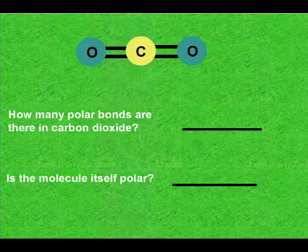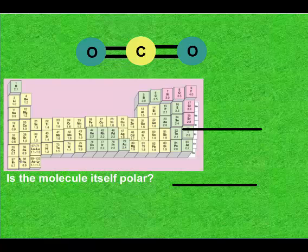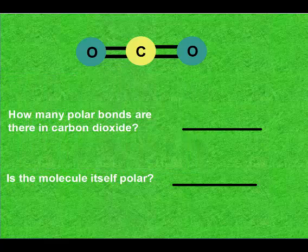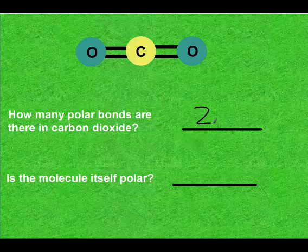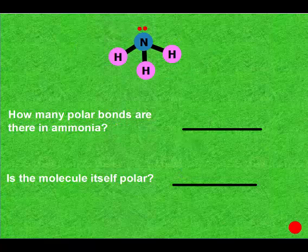We're going to pause the video and try this one on your own. Restart when you have both answers. Carbon was 2.5, oxygen was 3.5. So you should have said that both of those bonds were polar. And it doesn't matter that they're double bonds. You have two bonds, two double bonds that are both polar. And you should have said, no, the molecule is not polar, because we have the same thing all the way around with no lone pairs.